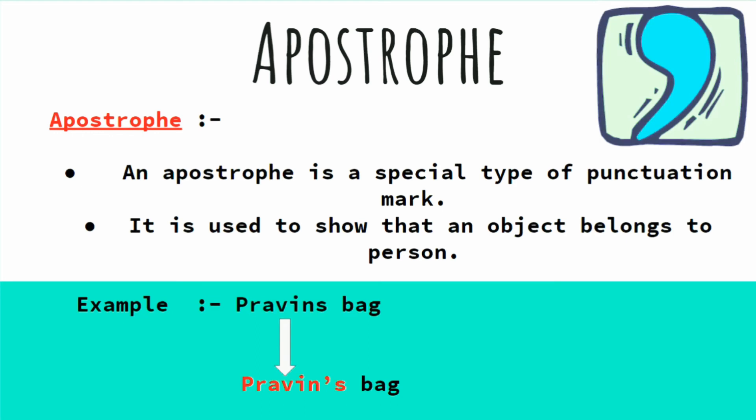An apostrophe is a special type of punctuation mark. It is used to show that an object belongs to a person. When we say that things belong to that person only, that time we use apostrophe.